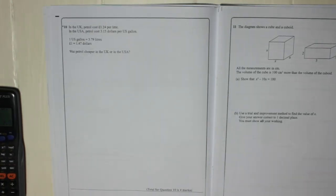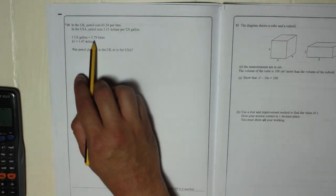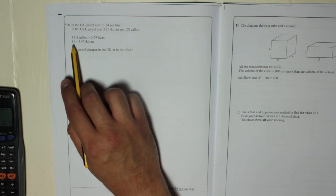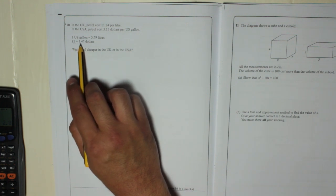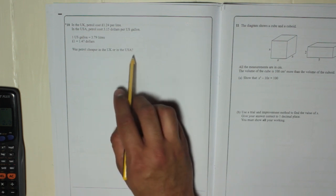Question 10. In the UK petrol costs £1.24 per litre. In the USA petrol costs $3.15 per US gallon. It says here that 1 US gallon is 3.79 litres and £1 is $1.45. Was petrol cheaper in the UK or the USA?